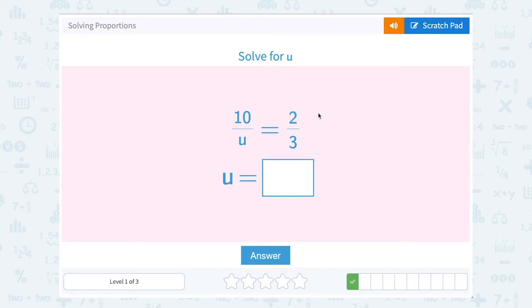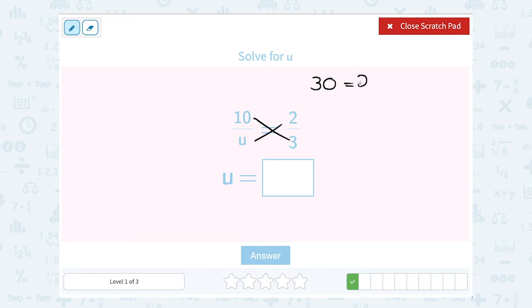10 over u is equal to 2 over 3. We want to solve for u. We're going to cross multiply and solve for u. So if we cross multiply on this side, 10 times 3 gives us 30. And we're going to set that equal to u times 2, which is 2u.